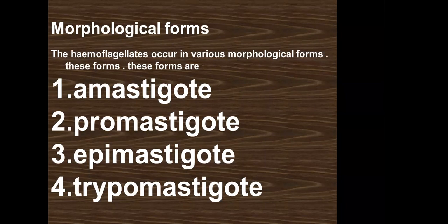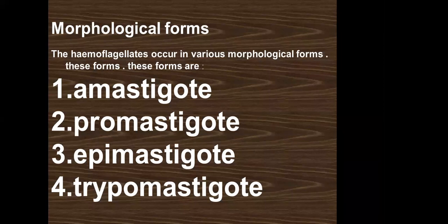In haemoflagellates, instead of cyst and trophozoite stages, there are four morphological stages: amastigote, promastigote, epimastigote, and trypomastigote. These are differentiated first by the presence or absence of the flagellum — absent in the amastigote, present in the other three stages.